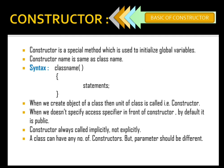When we don't specify an access specifier in front of a constructor — as you can see in the syntax I didn't write anything — by default it is public. One more thing: a constructor is always called implicitly, not explicitly. What do we mean by implicitly or explicitly? When I am going to call a particular function from an object, I have to write object dot function name — that means I am calling it explicitly. But a constructor is the only one called implicitly — when we create an object, the constructor is automatically called.